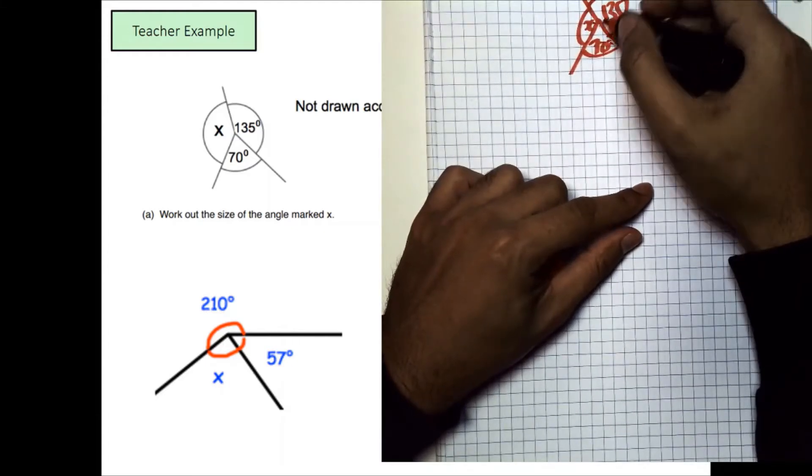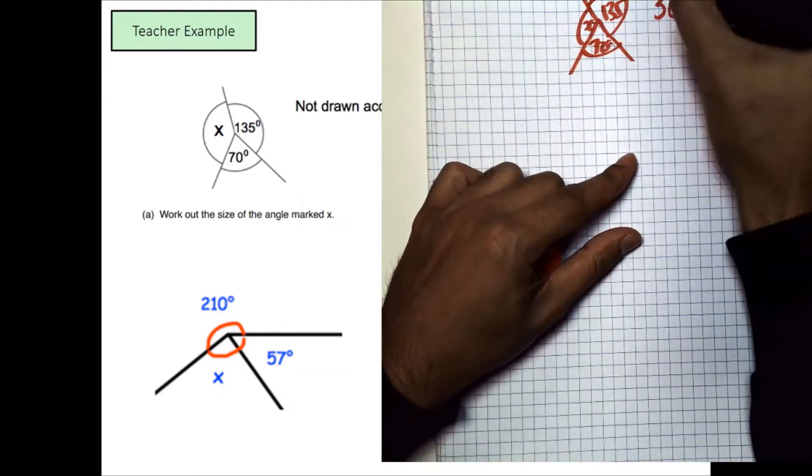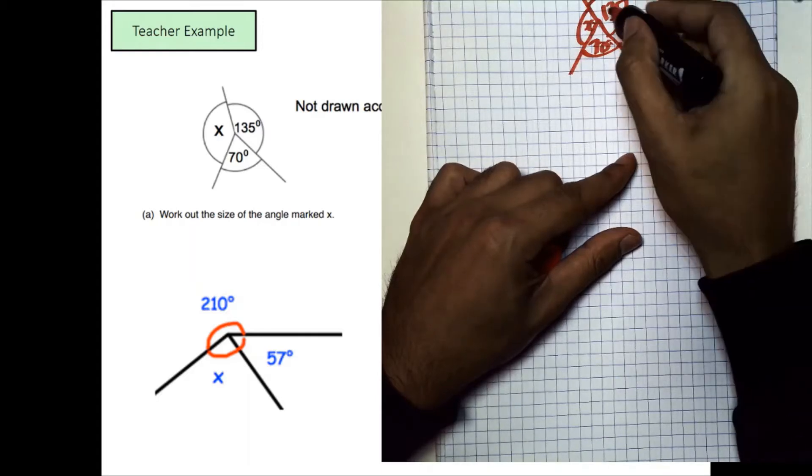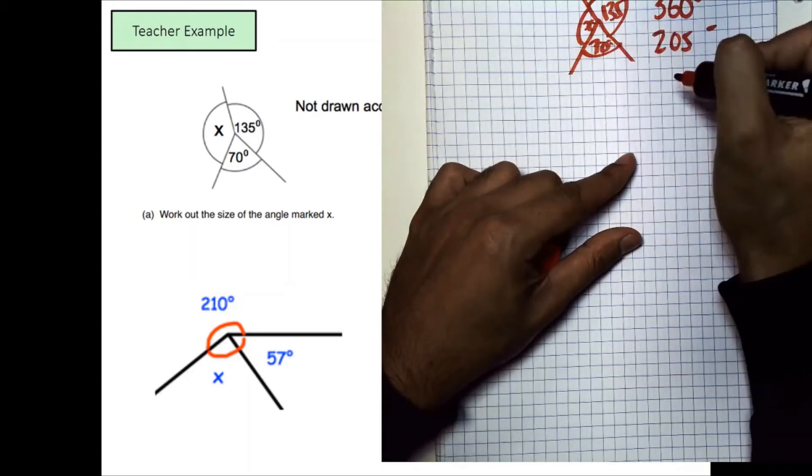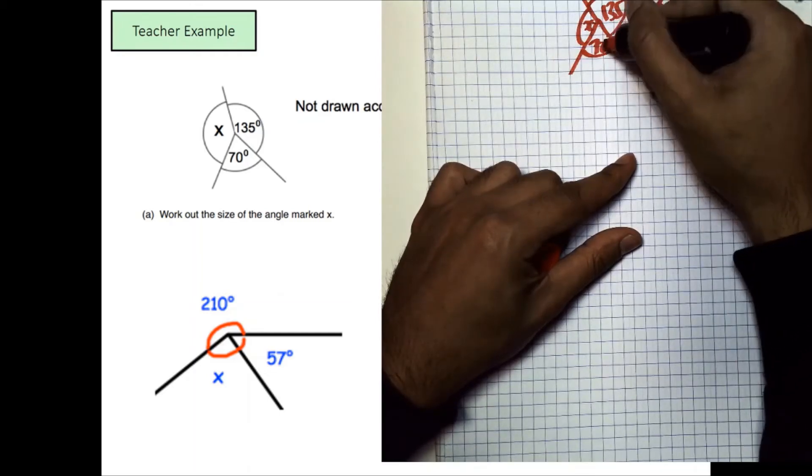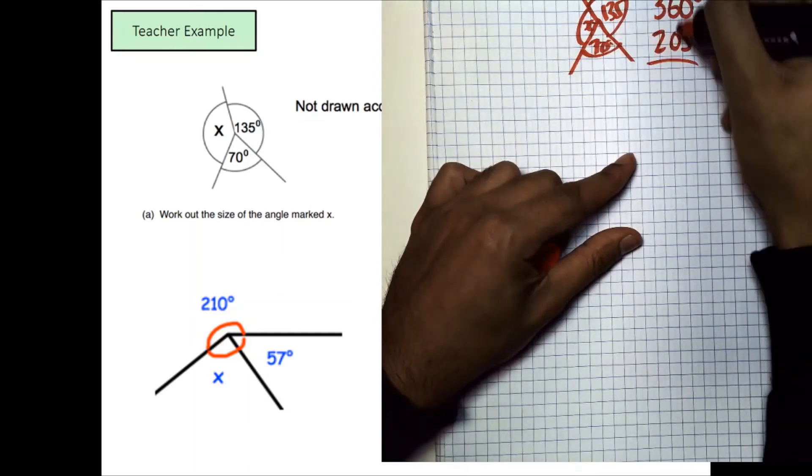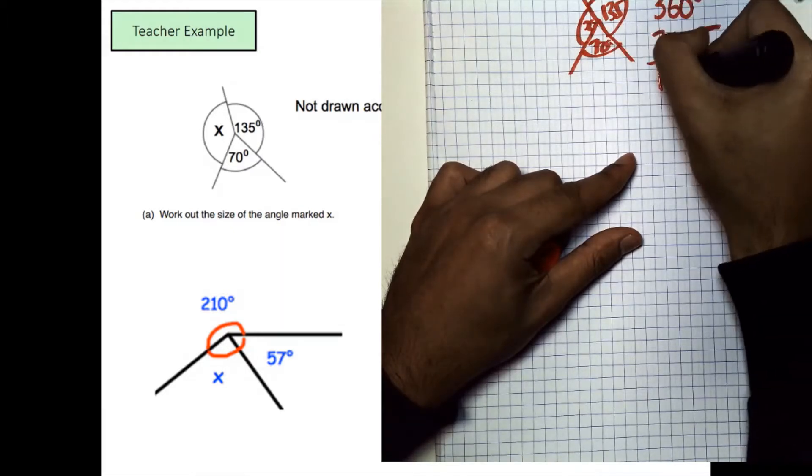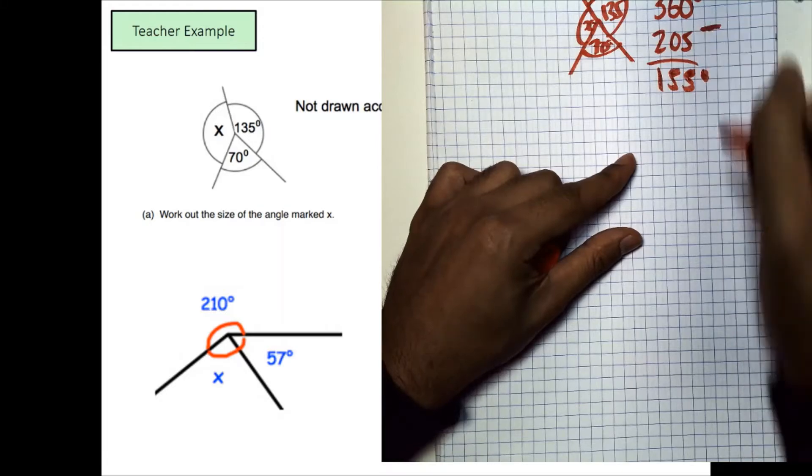Well, 135 and 70, that's going to be a total of 205. So I'm taking away 135 and I'm taking a total of 205 away. I'm adding these two together so I can do the subtraction in one go. Now from here, I can do the subtraction and that would give me 155 degrees.